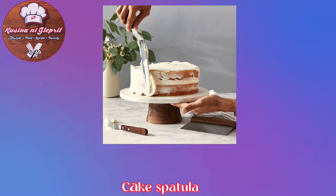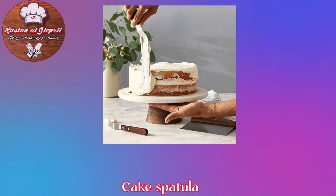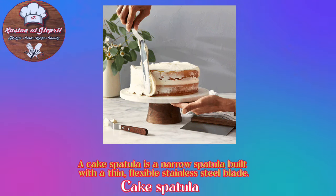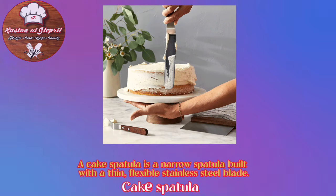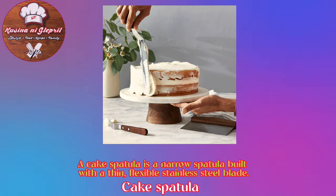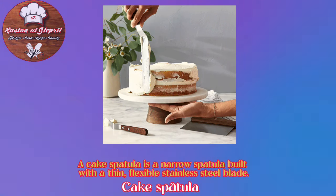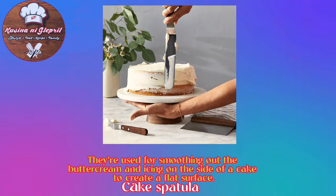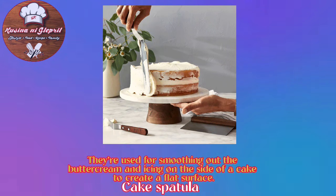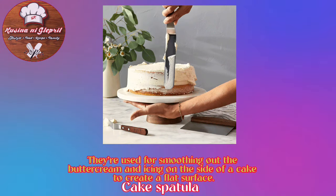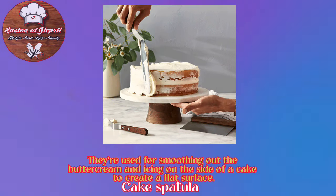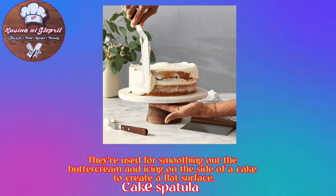Cake Spatula: A cake spatula is a narrow spatula built with a thin, flexible stainless steel plate. It is used for smoothing out the buttercream and icing on the side of a cake to create a flat surface.